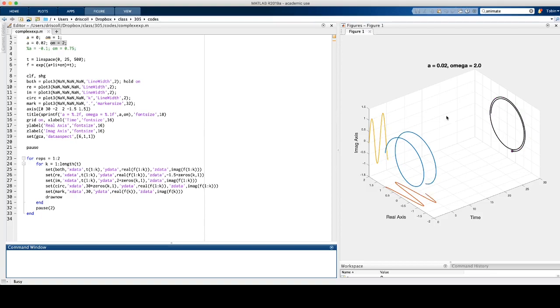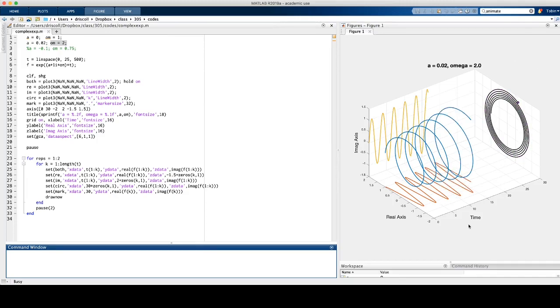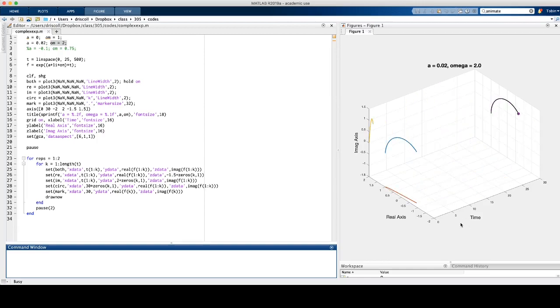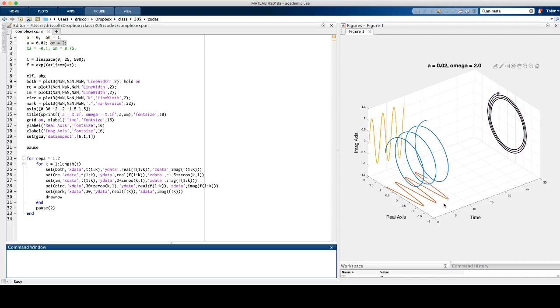So it goes around, but it doesn't quite meet back up, because the magnitude is growing, and so we get this outward spiral. And on the individual real and imaginary parts, you get cosine or sine, but with a growing amplitude.